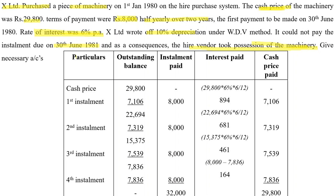We are given five columns: particular column, outstanding balance, installment, interest, and cash price paid. We start our answer with the cash price, writing 29,800 in the outstanding balance column because the total cash price is pending — the buyer has to pay the total cash price to the seller. There is no down payment in this problem, so we skip it. The first installment amount of 8,000 is recorded in the installment column.